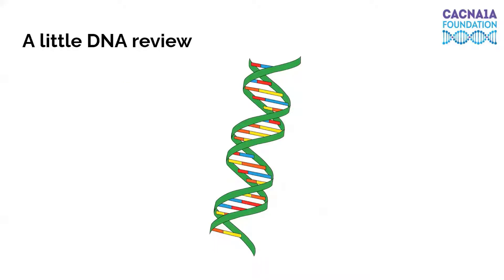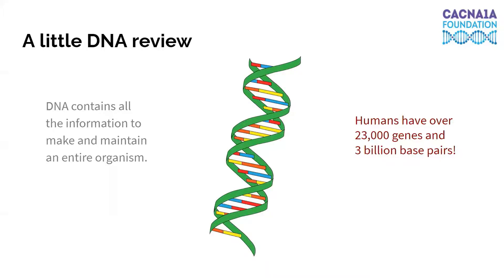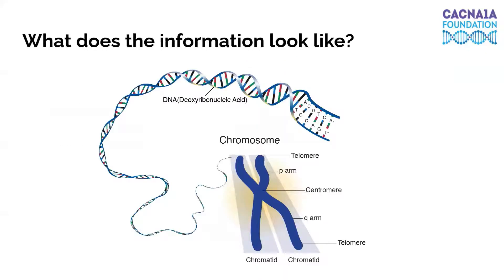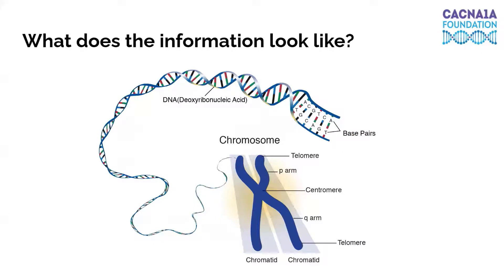Let's have a little bit of review about DNA before we go on here. DNA is what contains all of the information to make and maintain an entire organism. The human genome actually has over 23,000 genes and 3 billion base pairs or letters — so that's a lot of information. This information comes in the form of four nucleotides or bases: adenine, thymine, cytosine, and guanine. These nucleotides pair up — A to T and C to G — to form base pairs, and these base pairs connect two strands of DNA together to form that recognizable double helix structure.